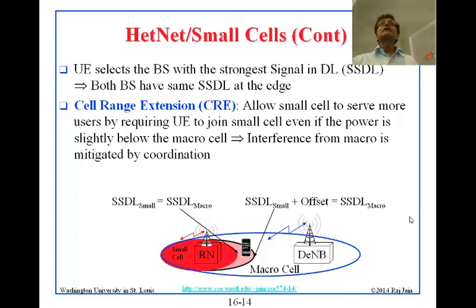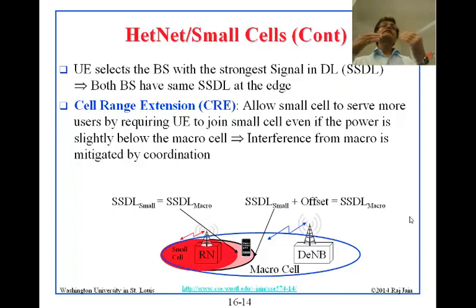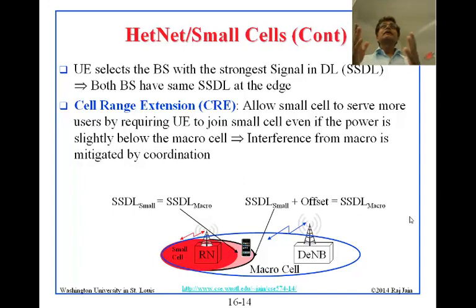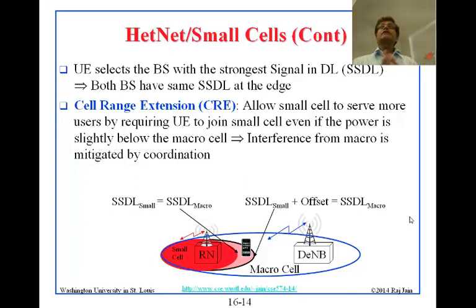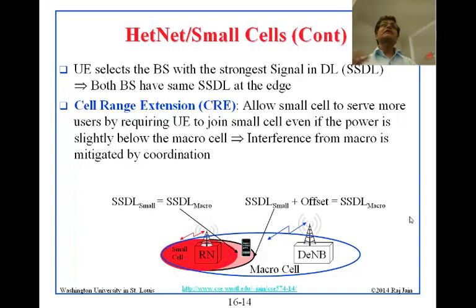So CoMP was the first concept, where you use the same frequency and decide when the right base station transmits so that the mobile does not receive two colliding signals — they just collaborate. CoMP is used in relay cells, in the Home ENB which is called femtocell, and in range extension as well.